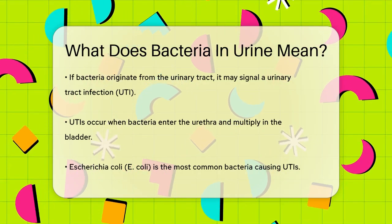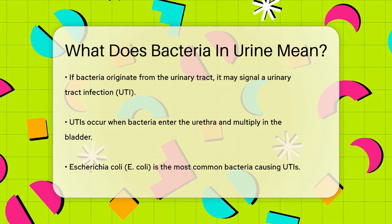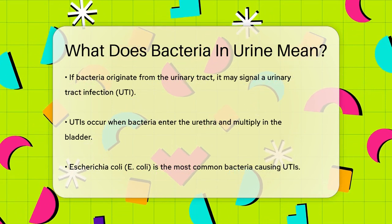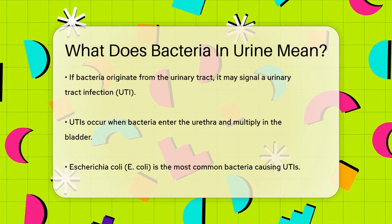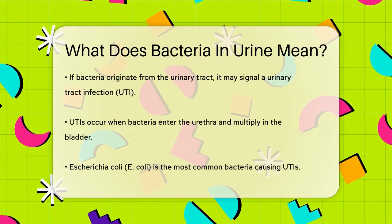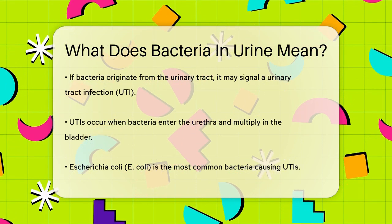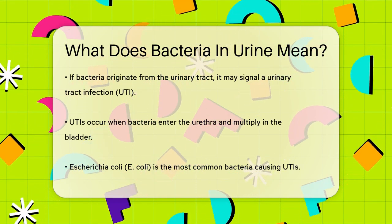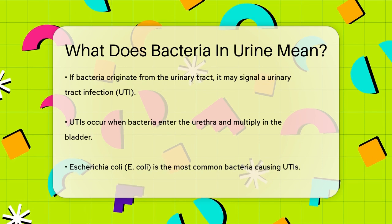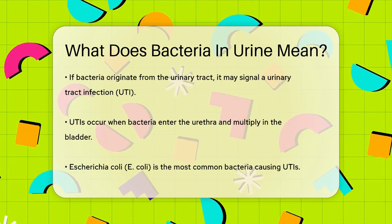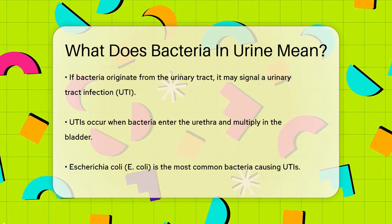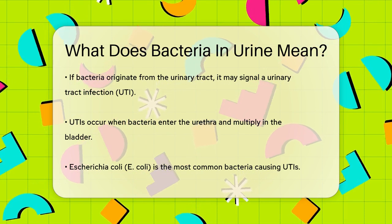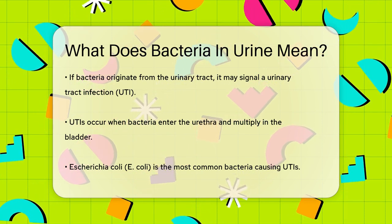UTIs happen when bacteria, usually from the anus or genitals, enter the urethra and start multiplying in the bladder or other parts of the urinary system. The most common bacteria responsible for UTIs is Escherichia coli, or E. coli, which is typically harmless in the intestines but can cause infections in the urinary tract.